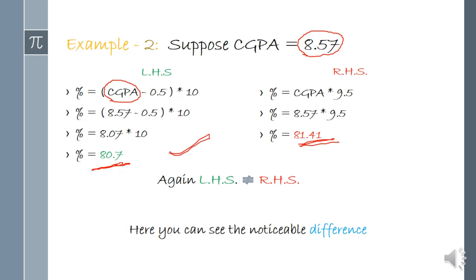So always use the left hand side formula if you are a student of BPUT. The right hand side formula may work for different universities, but for BPUT the left hand side formula is the correct one.